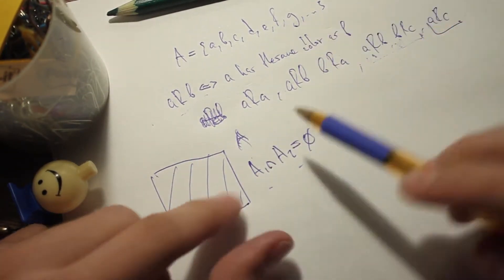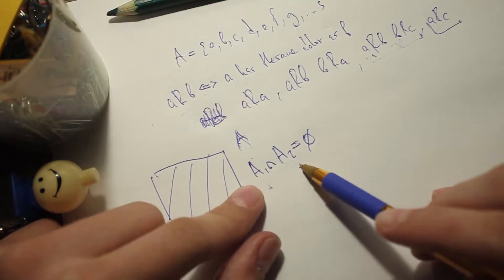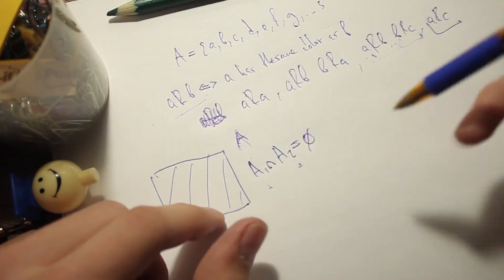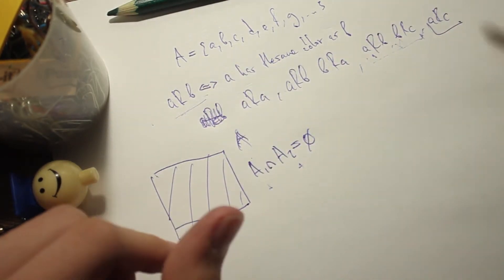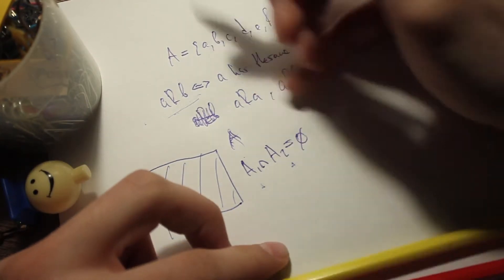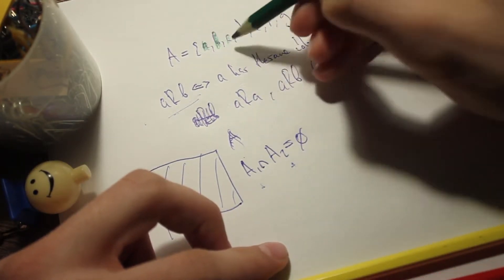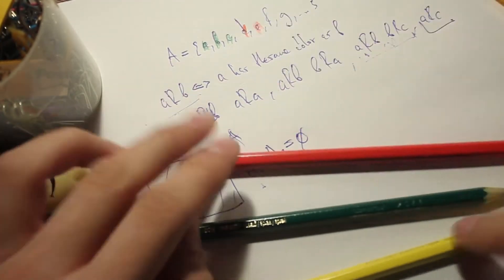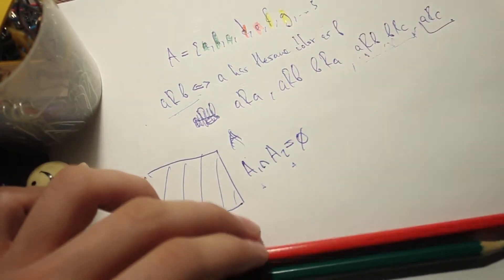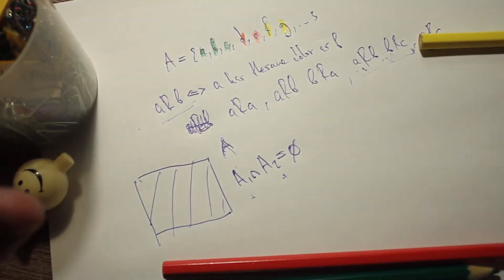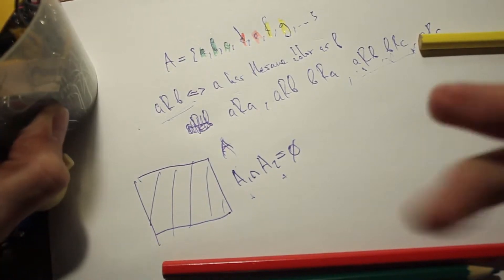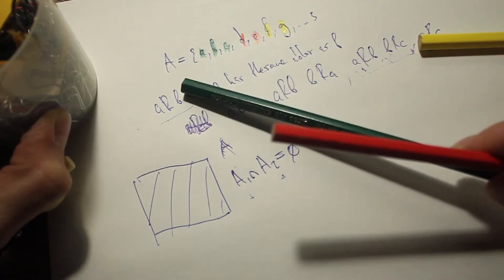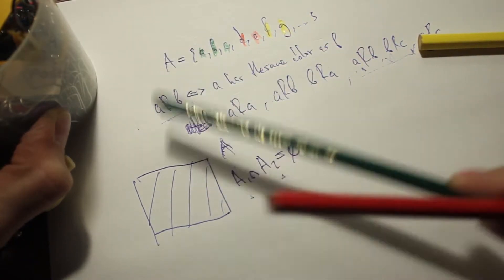What also matters is that those subsets exist under the equivalence relation. So for instance, cars A, B, and C are all green; cars D and E are red; and cars F and G are yellow. What we're going to do is create equivalence classes — subsets to which this equivalence relation applies.